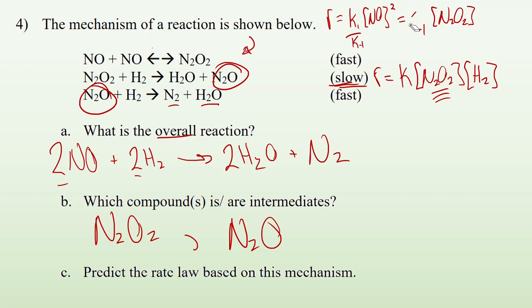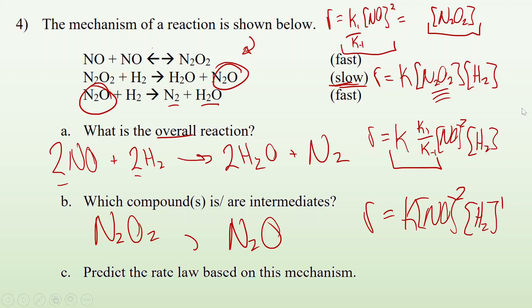So we're just going to combine all those constants and call it one big constant. So the concentration N2O2 is really all of this. So now I plug it in. My rate equals K times N2O2, which is K1 over K to the minus 1 times NO squared, and then the H2. Now, all of these are just numbers. So rate equals some constant times NO squared times H2 to the 1. There you go. That's it.